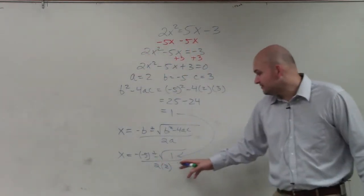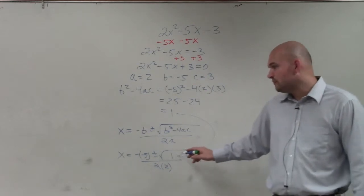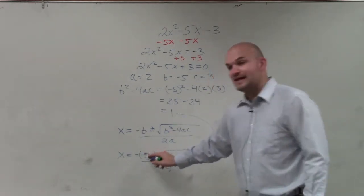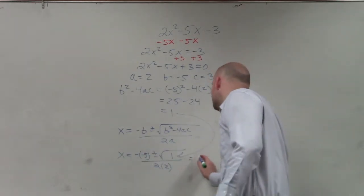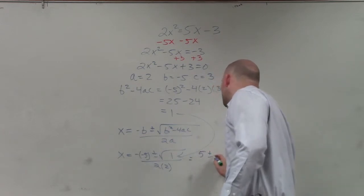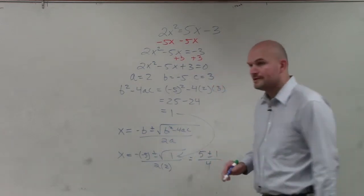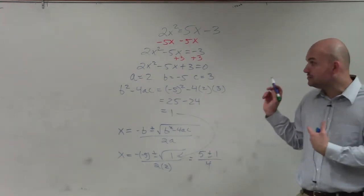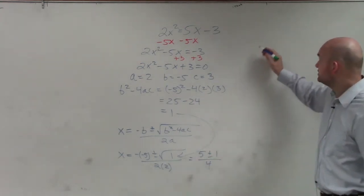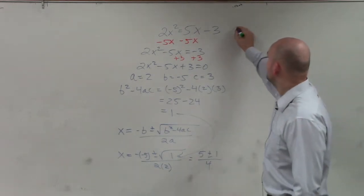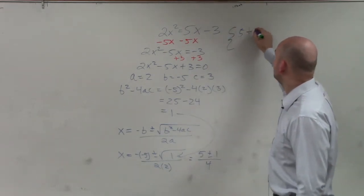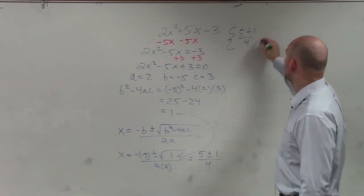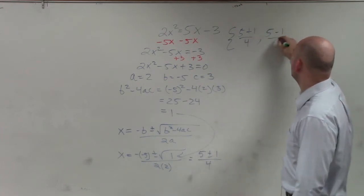So now to go ahead and simplify this, square root of 1 is just 1. Opposite of negative 5 is just positive 5. So I have positive 5 plus or minus 1 over 4. So now, if you guys remember how I wrote my solution sets up here, we can easily just write this as 5 plus 1 over 4, 5 minus 1 over 4.